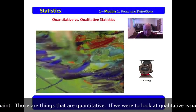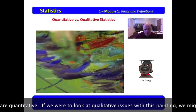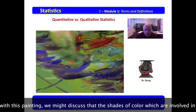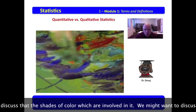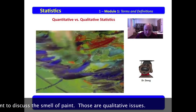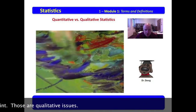If we were to look at qualitative issues with this painting, we might discuss the shades of color which are involved in it. We might want to discuss the smell of the paint. Those are qualitative issues.